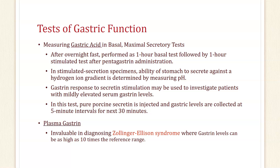For tests of gastric function, you can measure gastric acid in a basal-maximal secretory test. After an overnight fast, a one-hour basal test is performed followed by a one-hour stimulated test after pentagastrin administration. The gastrin response to secretin stimulation may be used to investigate patients with mildly elevated serum gastrin levels — pure porcine secretin is injected and gastrin levels are collected at five-minute intervals for 30 minutes. The plasma gastrin level is invaluable in diagnosing Zollinger-Ellison syndrome, where gastrin levels can be as high as 10 times the reference range.